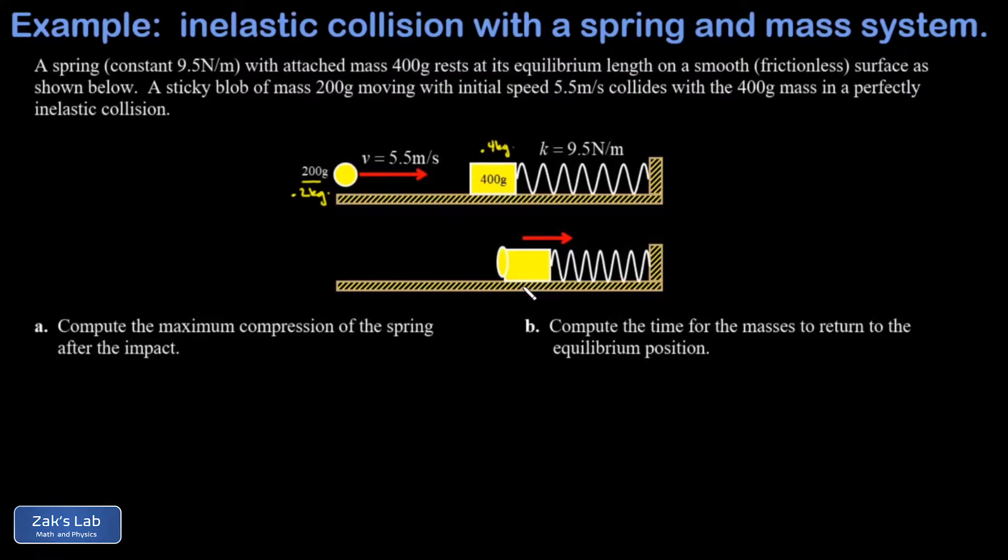In a perfectly inelastic collision, at the end of that collision there's going to be some initial speed v for the harmonic oscillator part of the problem. Then we'll use that speed to find the maximum compression of the spring, and finally we'll find the time for this combined mass to return back to the equilibrium position. That of course is related to the period of oscillation for this harmonic oscillator.